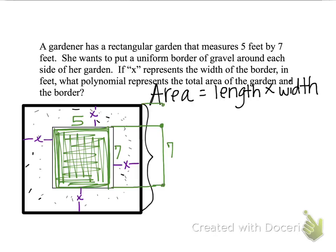So now what I also need to know is this distance here and this distance here. Well those are each X units long because it's X units from the top of the garden to the top of the border and it's X units from the bottom of the garden to the bottom of the border. So this total distance is X plus 7 plus X which we can also call 2X plus 7.